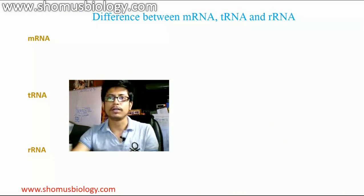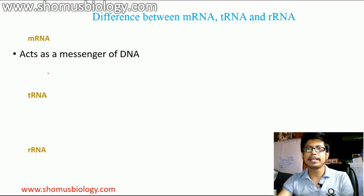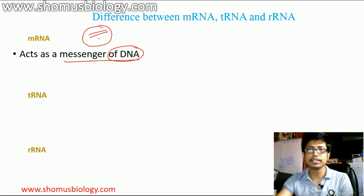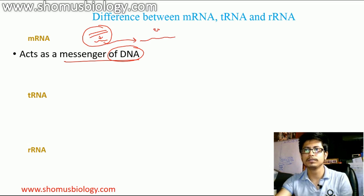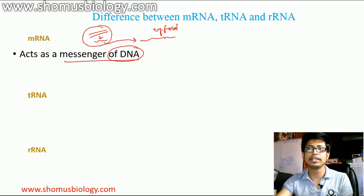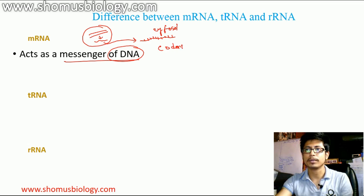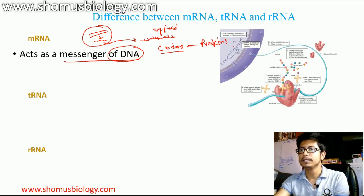Let us move on to the functions of mRNA, tRNA, and rRNA. mRNA acts as a messenger of the DNA. DNA is present inside the nucleus; it is transcribed into mRNA inside the nucleus, and that mRNA is transferred into the cytosol and then translated into proteins. mRNA contains all the information that the DNA has, transferred in the form of three-nucleotide sequences known as codons. Once you read the codons, you get proteins. The mRNA is taken outside the nucleus through the nuclear pore complex, and then it is translated with the help of ribosomes and tRNA.